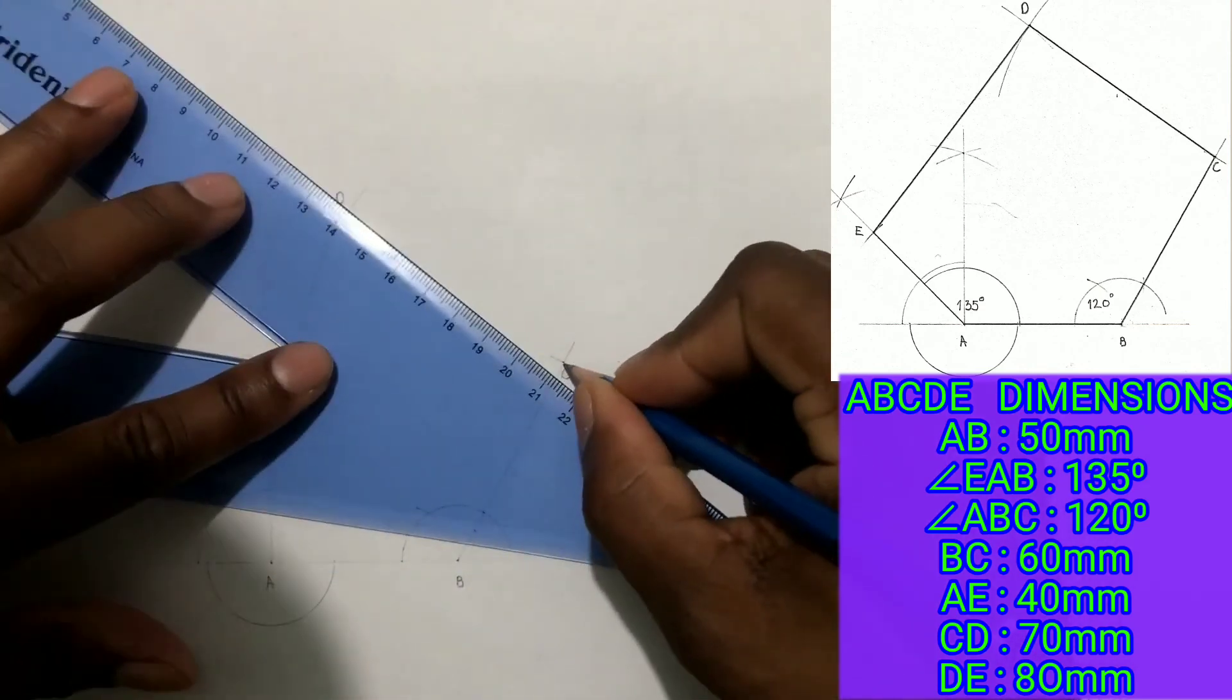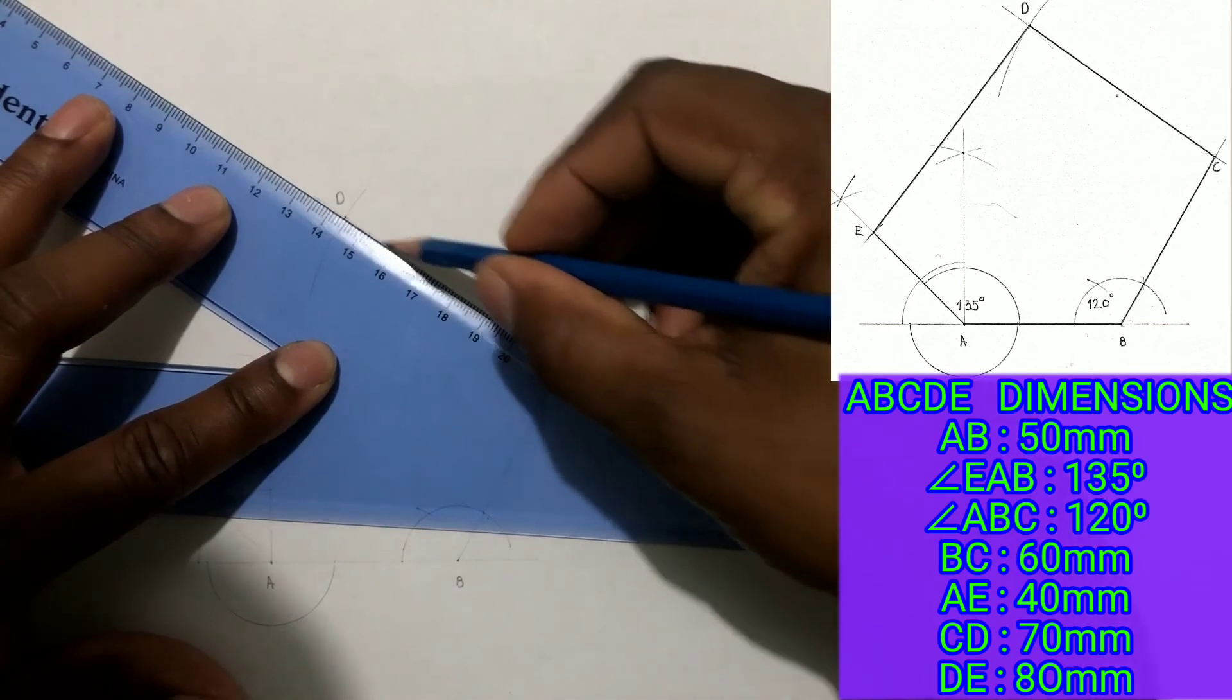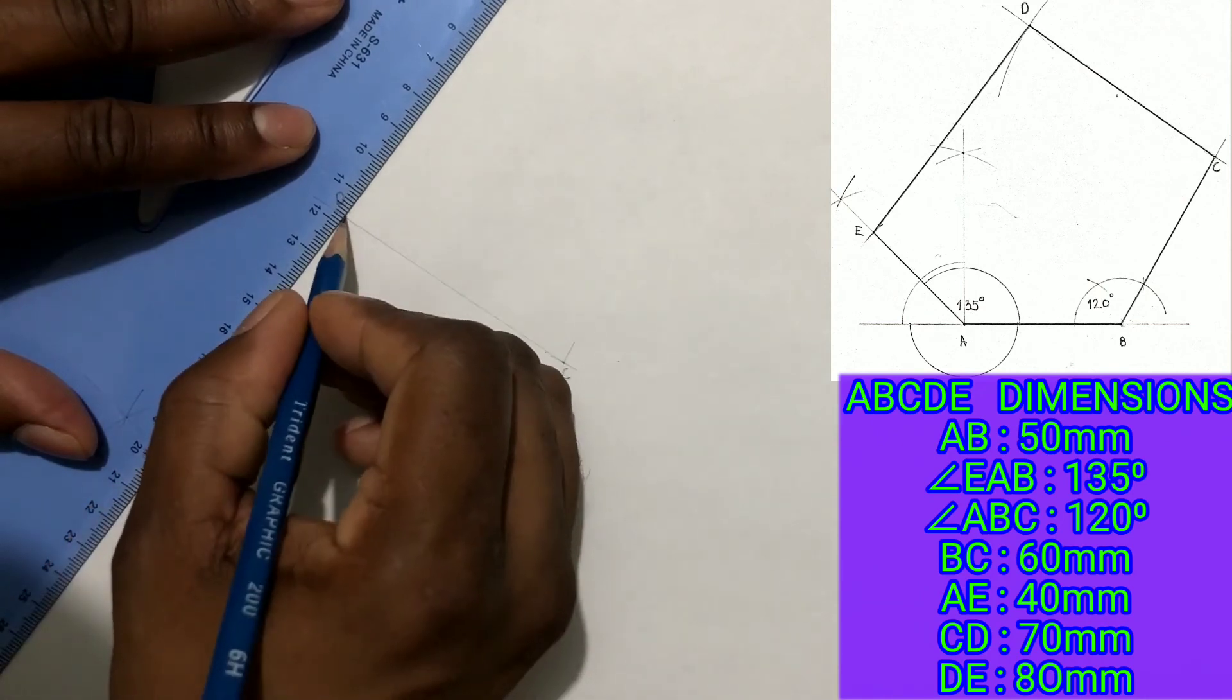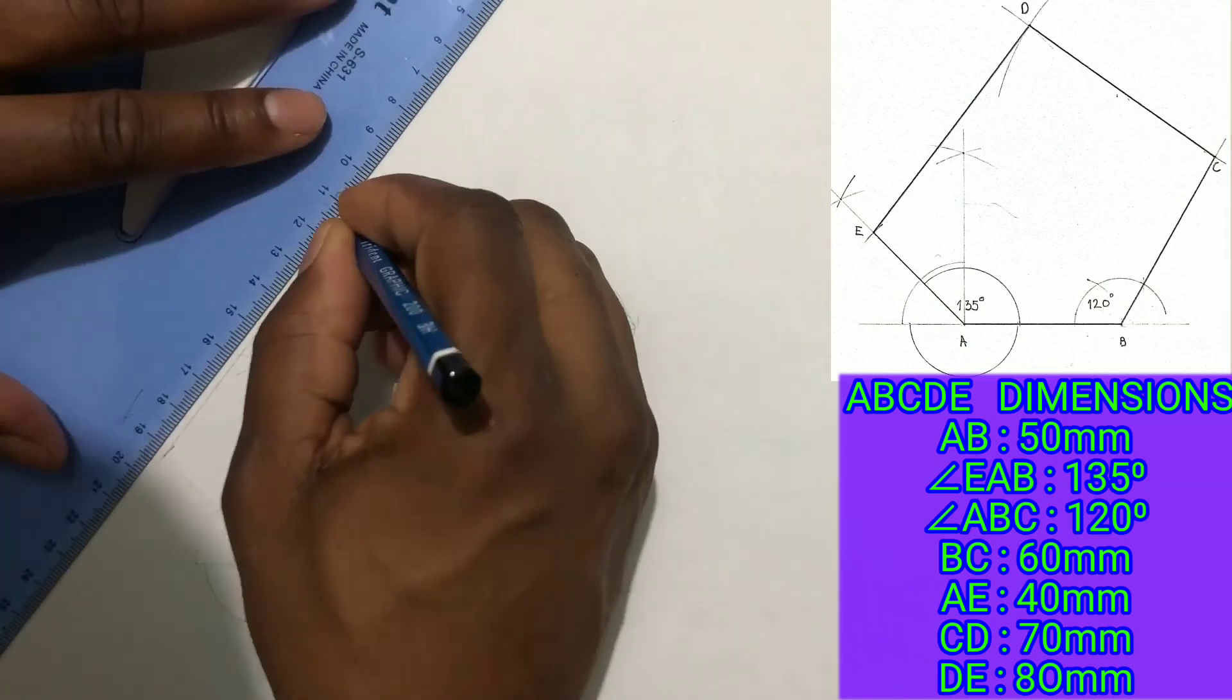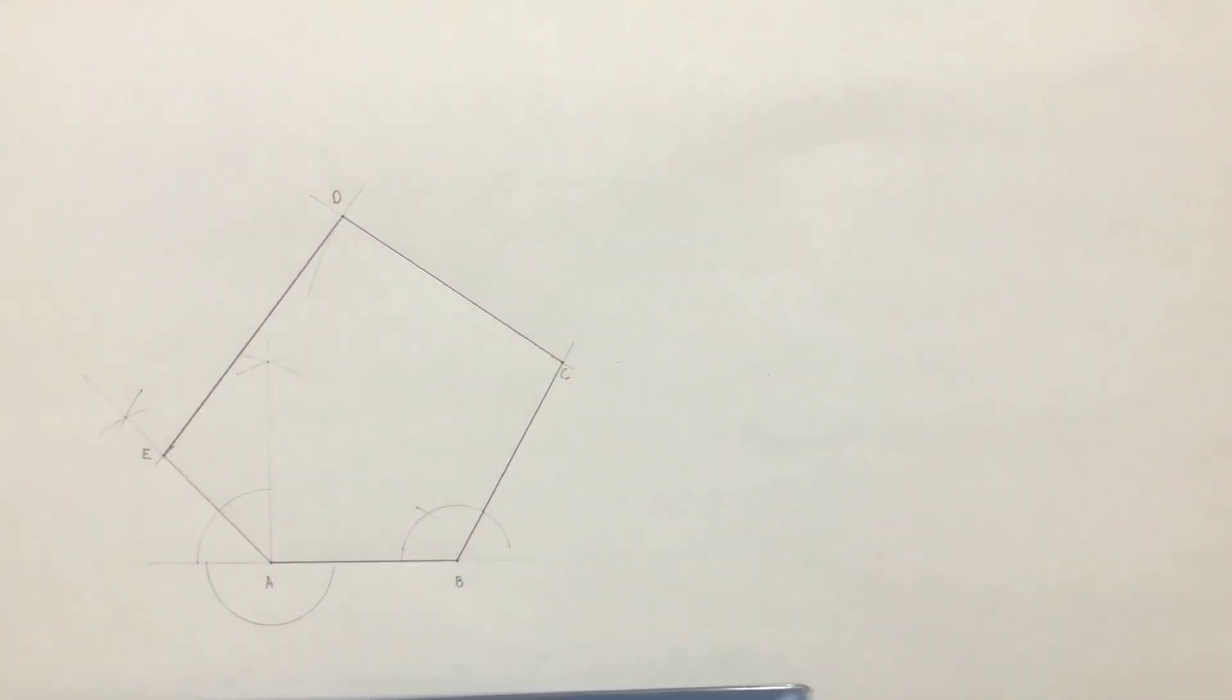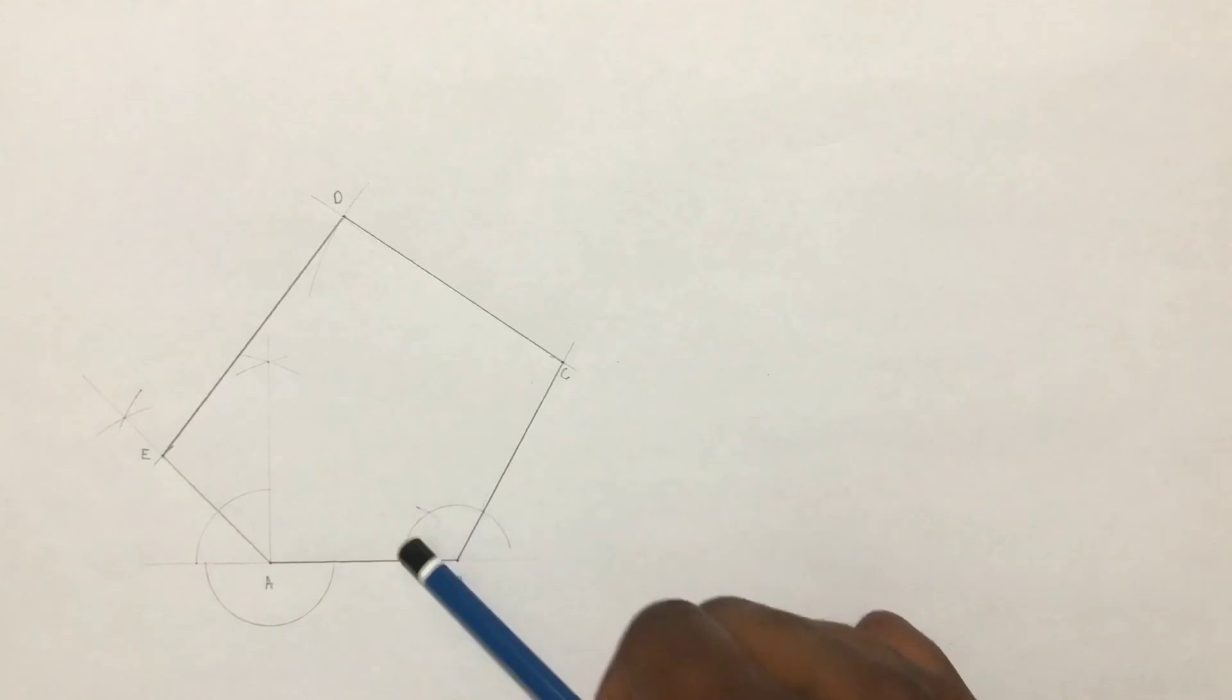Now draw a line from point C to point D, and from point D to point E. Now outline the irregular pentagon you have just constructed. Irregular polygons such as this one consists of unequal length of sides and also unequal angles.